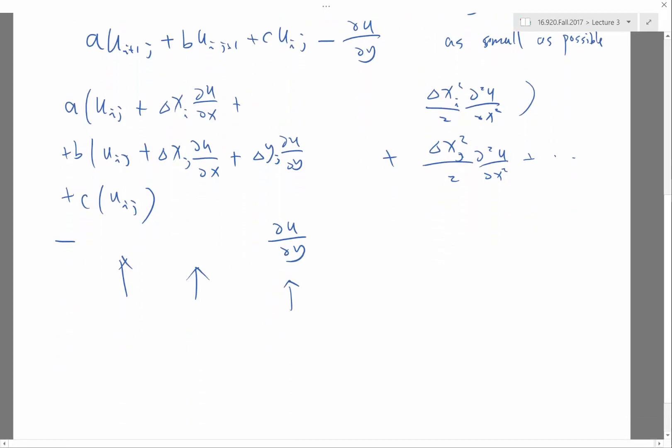But here, all I can do is, if I want to cancel the first term, I have to have A plus B plus C equal to zero, so this term would cancel.